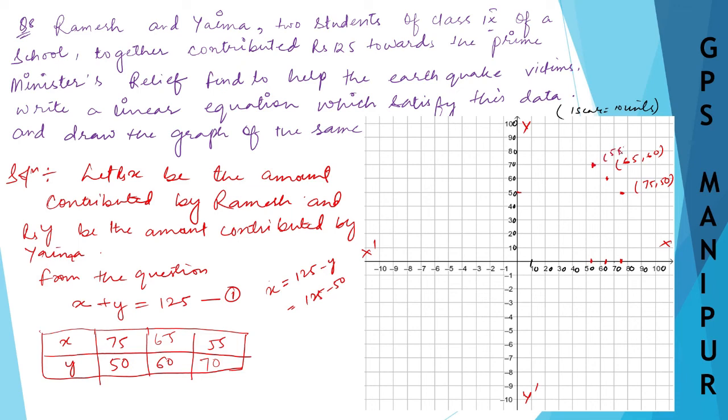I can join these three points, which is my required graph. This graph shows that if Ramesh contributed 40, then Yaima is going to contribute around 85 rupees. This is how the graph works.